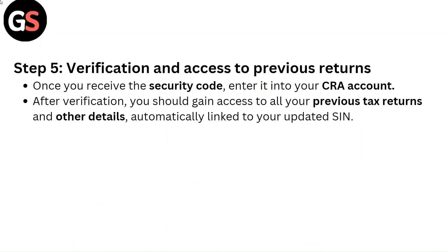Step 5: Verification and access to previous returns. Once you receive the security code, enter it into your CRA account. After verification, you should gain access to all your previous tax returns and other details, automatically linked to your updated SIN.